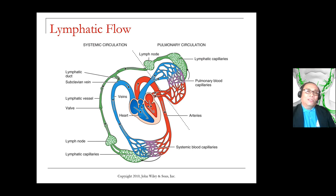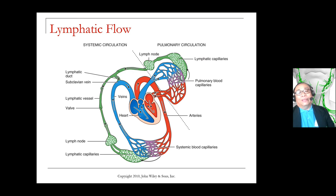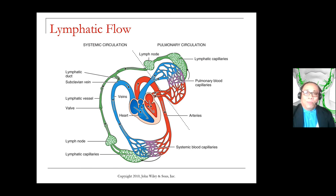The lymphatic system is inserted in places where the capillary beds are situated in the diagram of the circulatory system. The lymph fluid will return to the circulatory system and eventually mix with blood prior to returning back to the first chamber, which is the right atrium.